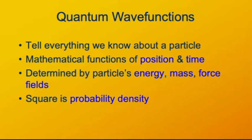Where the wave function is high, there's a high probability that the electron will be found in that region. Where the wave function has a low value, there's a very low probability that the electron will be found there.